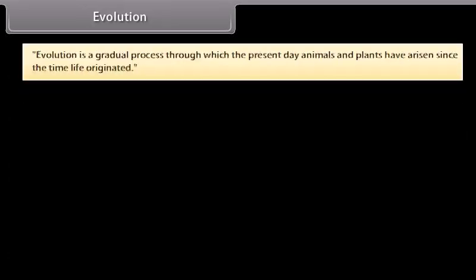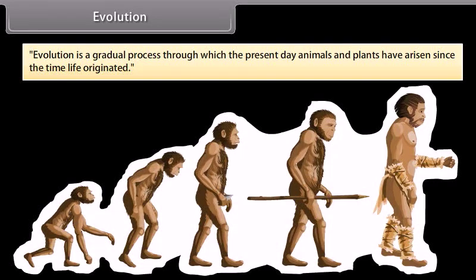Evolution is a gradual process through which the present-day animals and plants have arisen since the time life originated.